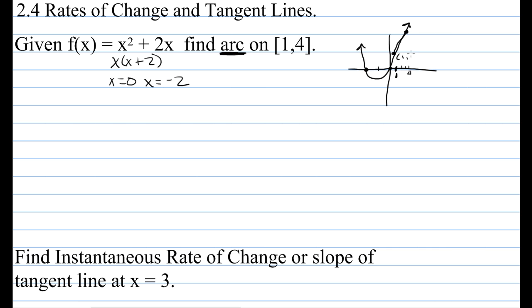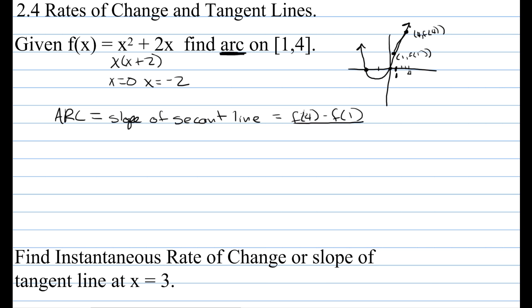The first point is 1 and f of 1, which equals 3 — plug 1 into the function, you get 3. The second point is 4 and f of 4: 16 plus 8 is 24. To find the average rate of change — the slope of the secant line — it's f of 4 minus f of 1, which is the distance traveled, over 4 minus 1, which is 3 seconds. That gives us 24 minus 3 over 3, which is 21 over 3. The final answer is 7.